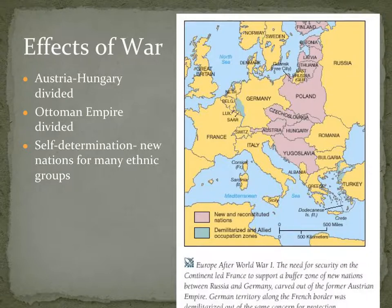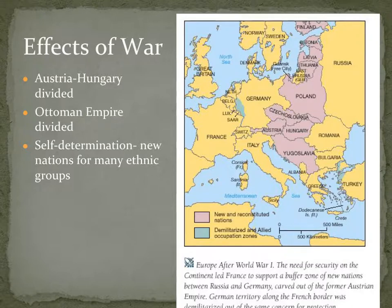The new countries created include Finland, Estonia, Latvia, Lithuania, Poland, Czechoslovakia, Austria, Hungary, Yugoslavia, and Turkey. Yugoslavia was supposed to be that Slavic state — remember at the beginning how Serbia wanted to create a nation for Slavic people? Yugoslavia was supposed to be the solution to all of that.